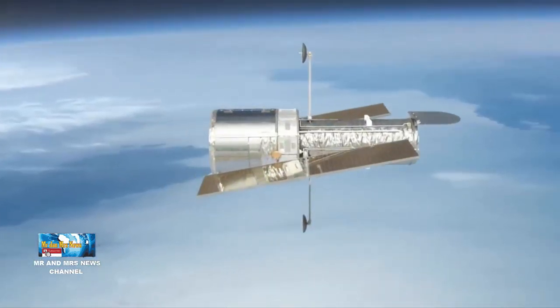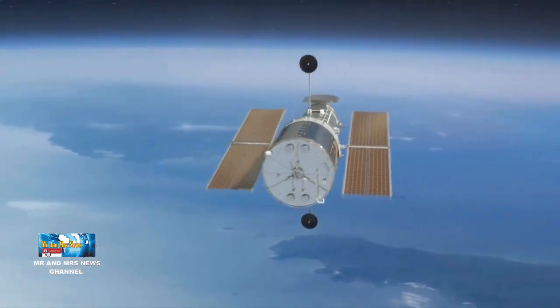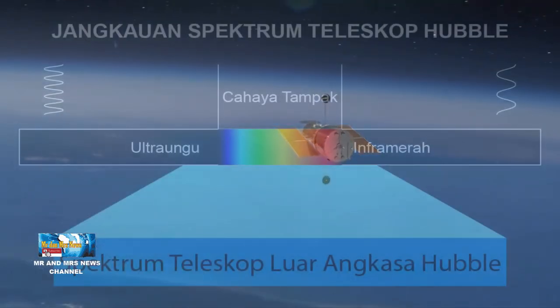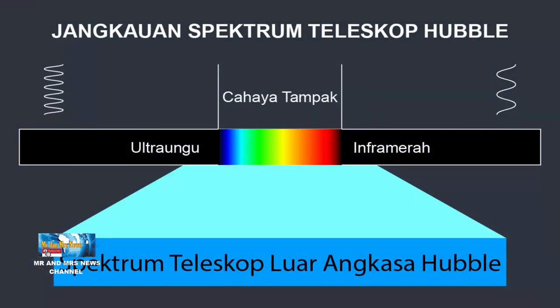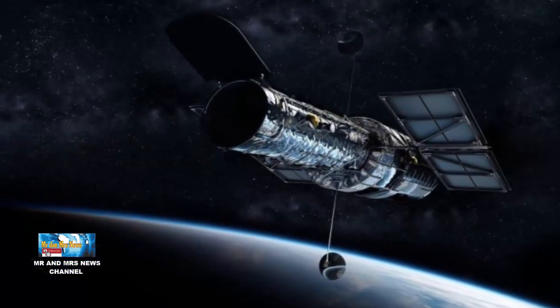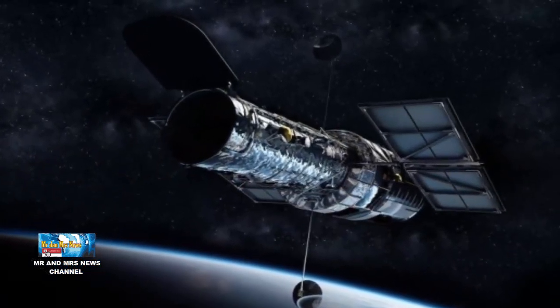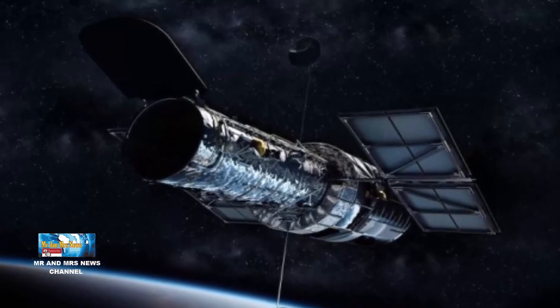Instrumen Hubble dapat mengamati sebagian kecil spektrum inframerah dari 0,8 hingga 2,5 mikron, tetapi kemampuan utamanya berada di bagian spektrum ultraviolet dan terlihat dari 0,1 hingga 0,8 mikron.